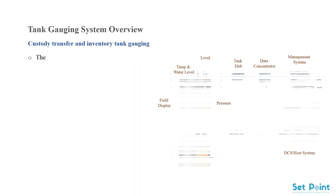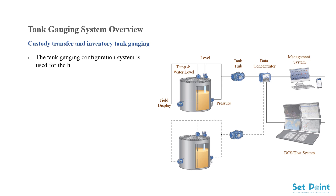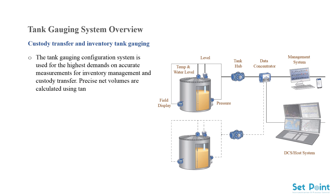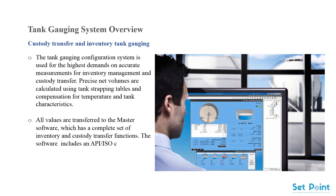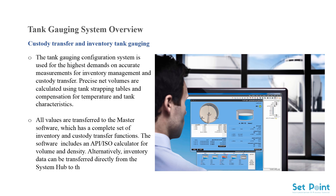The tank gauging configuration system is used for the highest demands on accurate measurements for inventory management and custody transfer. Precise net volumes are calculated using tank strapping tables with compensation for temperature and tank characteristics. All values are transferred to the master software, which includes a complete set of inventory and custody transfer functions, including an API/ISO calculator for volume and density. Alternatively, inventory data can be transferred directly from the system hub to the DCS without going via software.